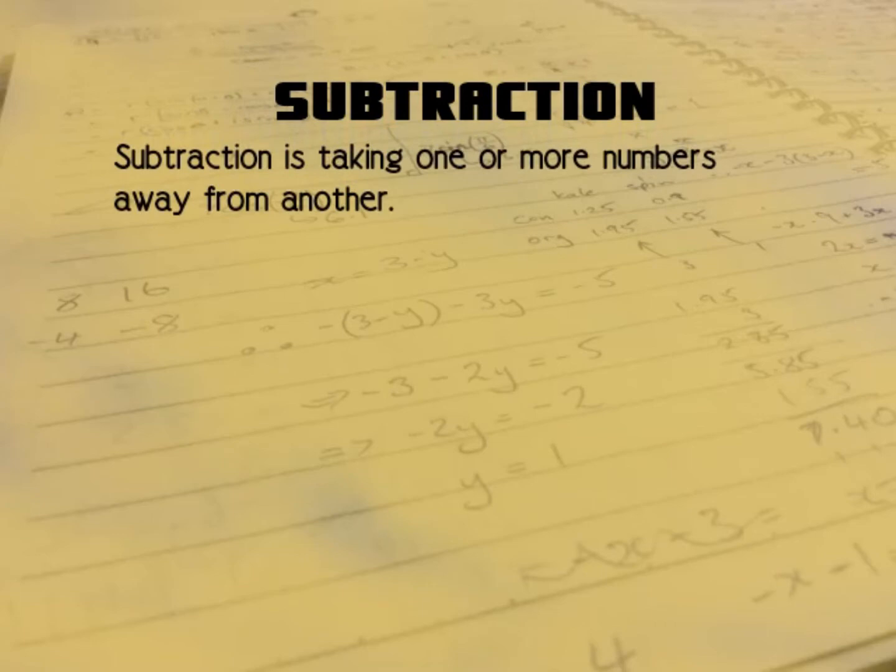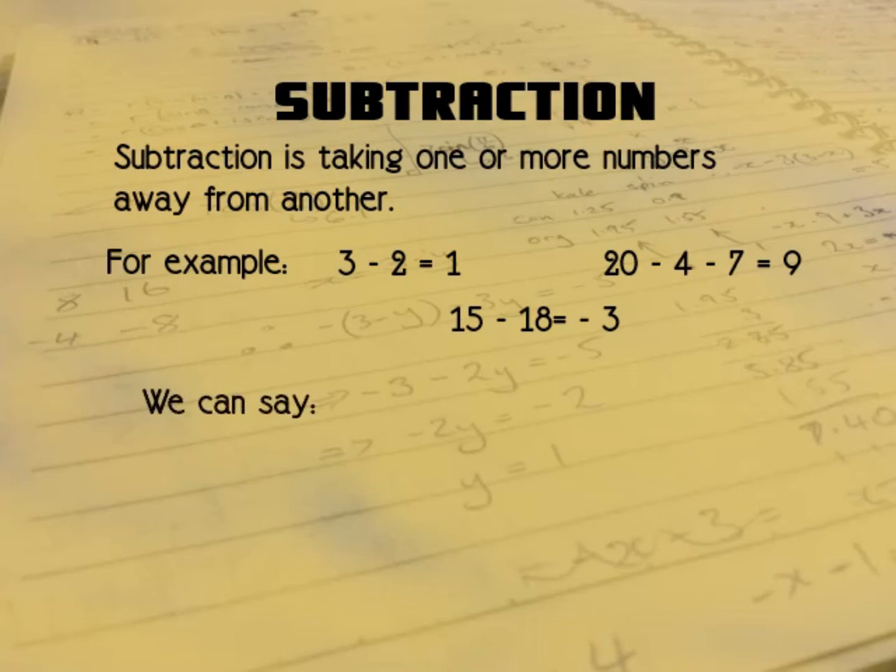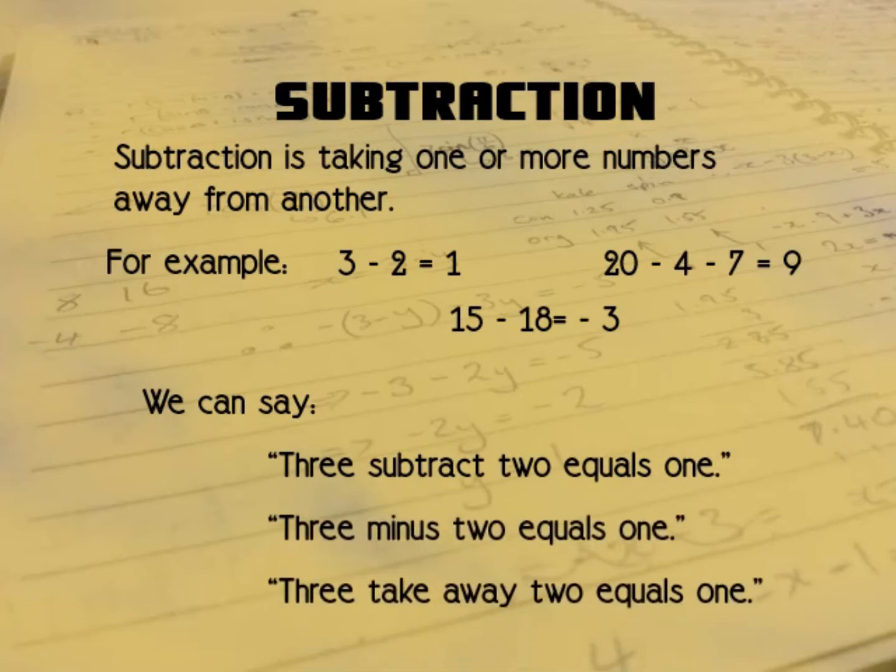Subtraction is the opposite of addition. It is taking one or more numbers away from another number. For example, 3 subtract 2 equals 1, so you start with 3 and you take away 2, you end up with 1. 20 subtract 4 subtract 7 equals 9. And then this one's a bit strange: 15 subtract 18 equals minus 3. Minus is below 0, but you can see we use the subtract sign again just to talk about numbers below 0. We can also say 3 minus 2 equals 1 or 3 take away 2 equals 1.